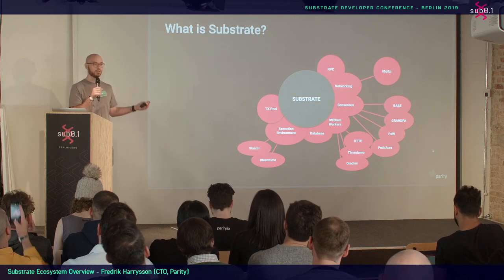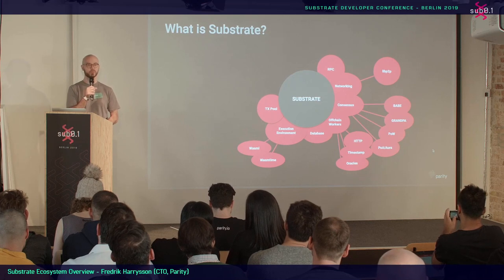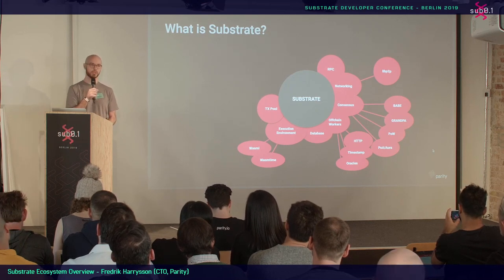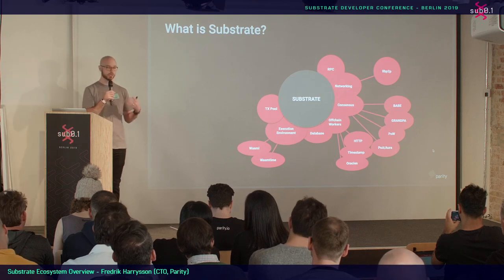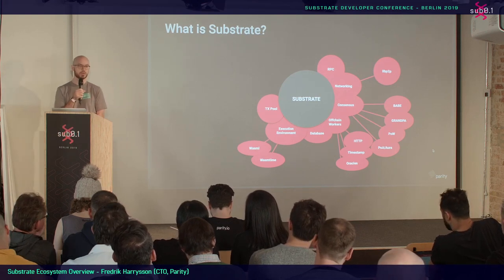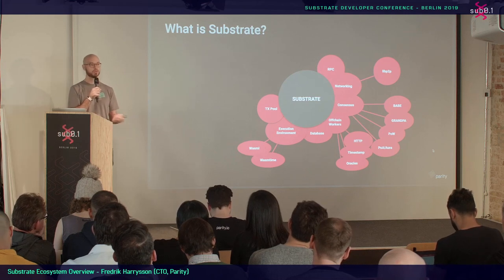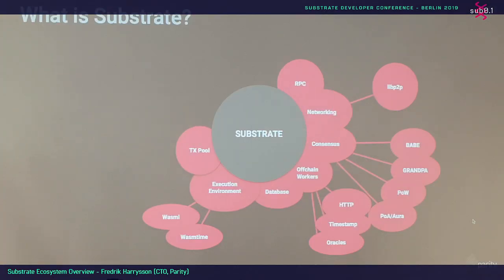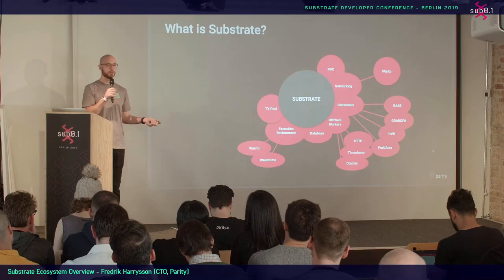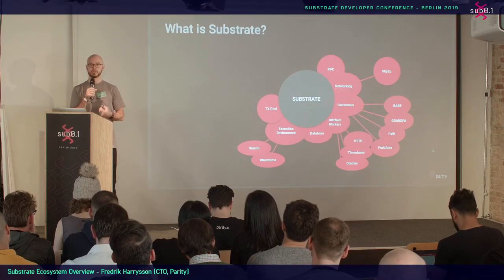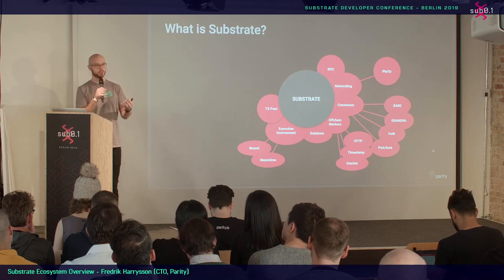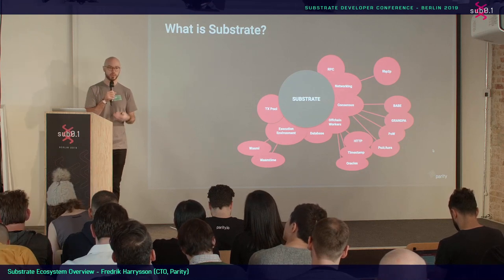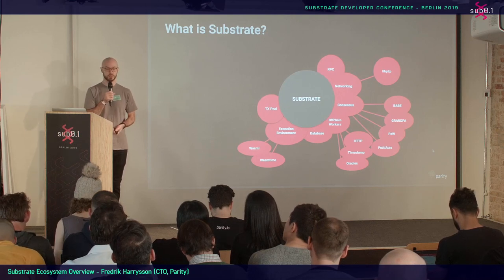With off-chain workers — a new feature that lets you reach outside of the blockchain and into the real world — we think this is something super exciting that people will be doing really cool things with. Off-chain workers aren't just one thing; they have their own modules. We've built an HTTP module to do HTTP requests from a chain, a timestamp module to deal with timestamps, and we're building more complicated things like oracles. It should be super simple to do any off-chain activity using off-chain workers and one of its modules.